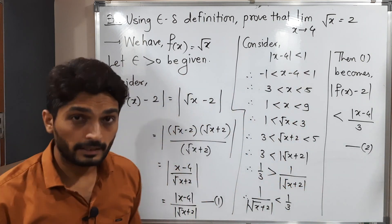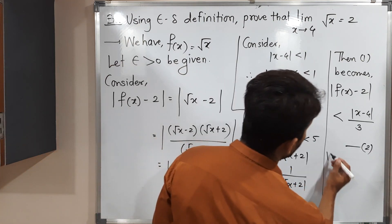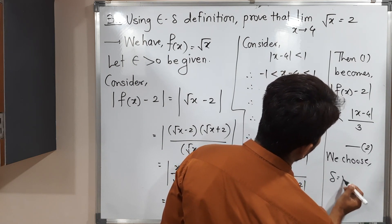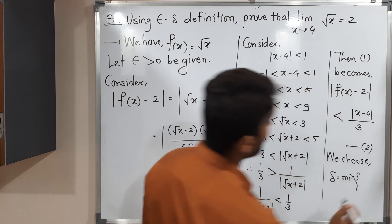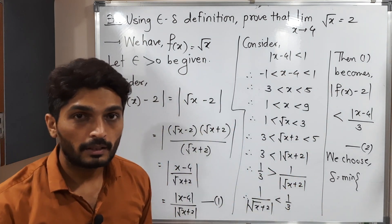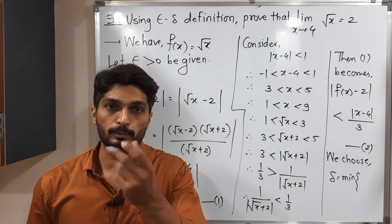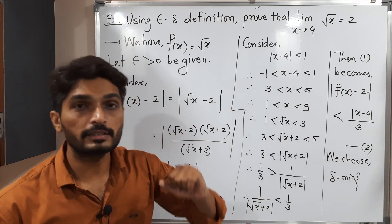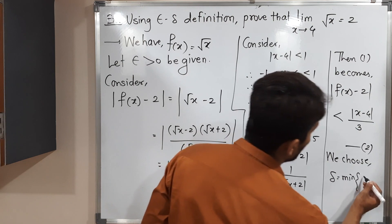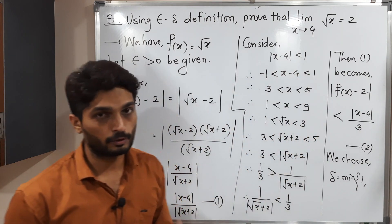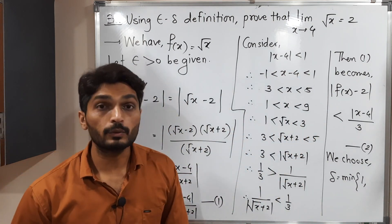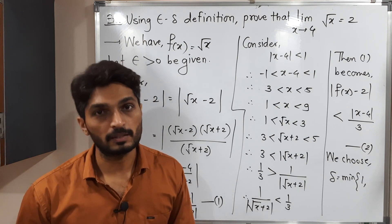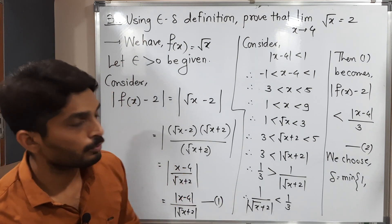After that we select delta. We choose delta = minimum(1, 3ε). We write minimum because we already considered |x - 4| < 1, so our choice of delta must be the minimum of 1 and the epsilon-related term. This is the same approach we used in our previous study.